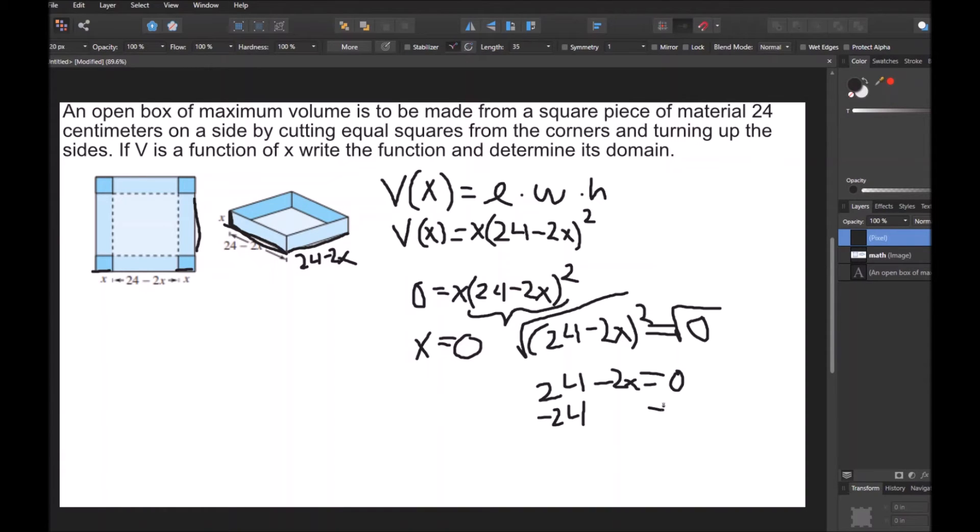Subtract by 24 on both sides. And then we have negative 2X equals negative 24. Divide by negative 2 on both sides to get X alone. And then X equals 12.